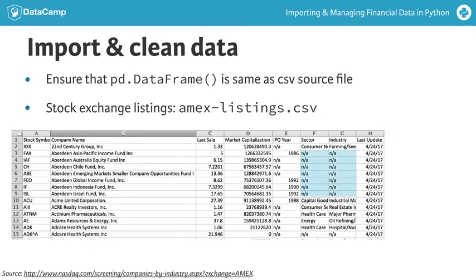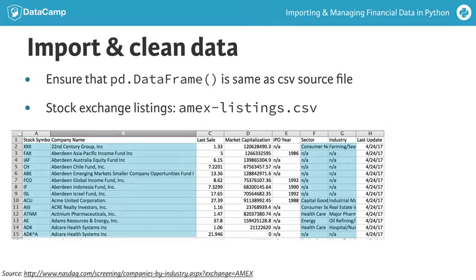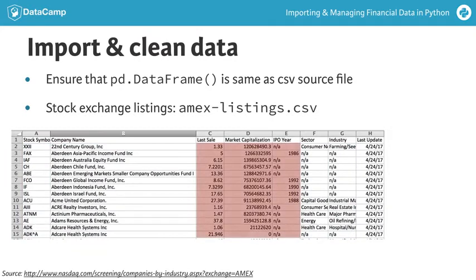A quick look at the file reveals a few missing values, identified by the string n/a. You can also see that this CSV file contains three different types of data: four columns contain text data, also called strings; three columns contain numeric data; and one column has date information.